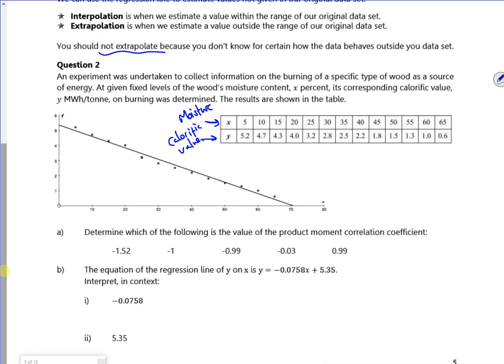So we've got the moisture and we've got the calorific value. So x is moisture and y is calorific value. Right. So if you look, it's quite a strong negative correlation there, isn't there? So it's going to be minus 0.99.